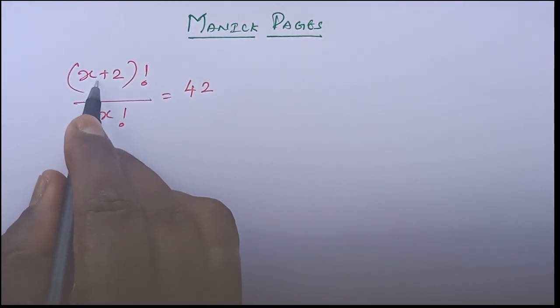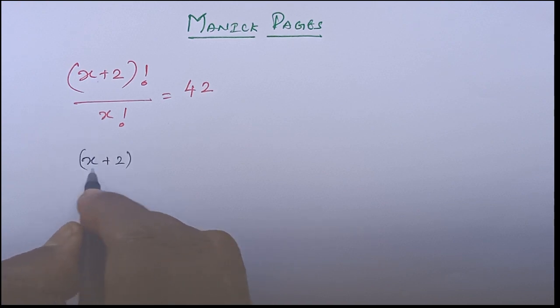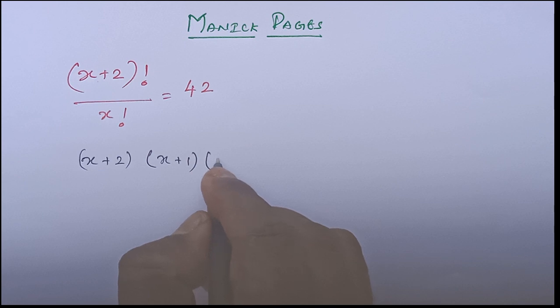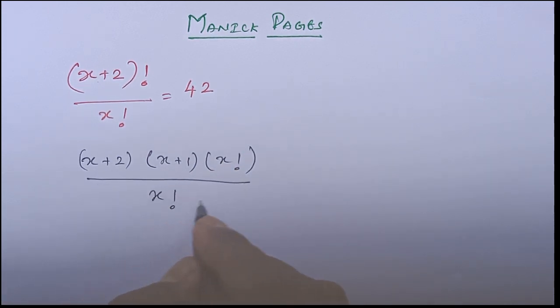So now x plus 2 factorial means x plus 2 into x plus 1 into x factorial, we can write whole divided by x factorial which is equal to 42.